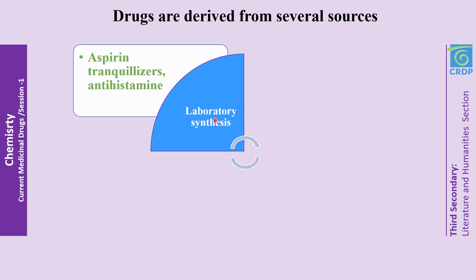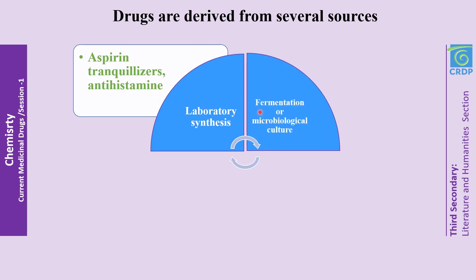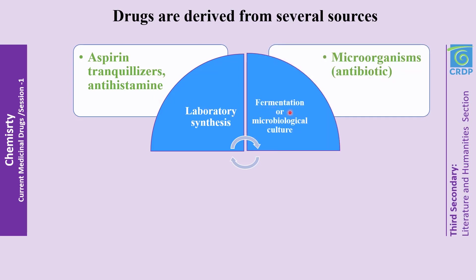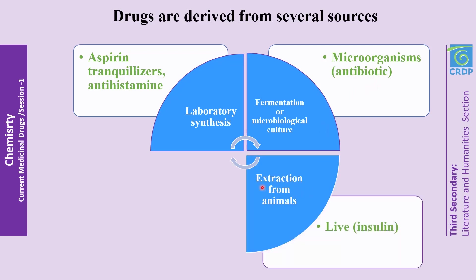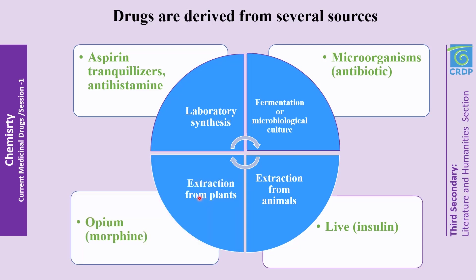These sources include: laboratory synthesis, such as aspirin, tranquilizers, and antihistamines; fermentation or microbiological culture, such as from microorganisms; extraction from animals, such as insulin; and extraction from plants, such as morphine.